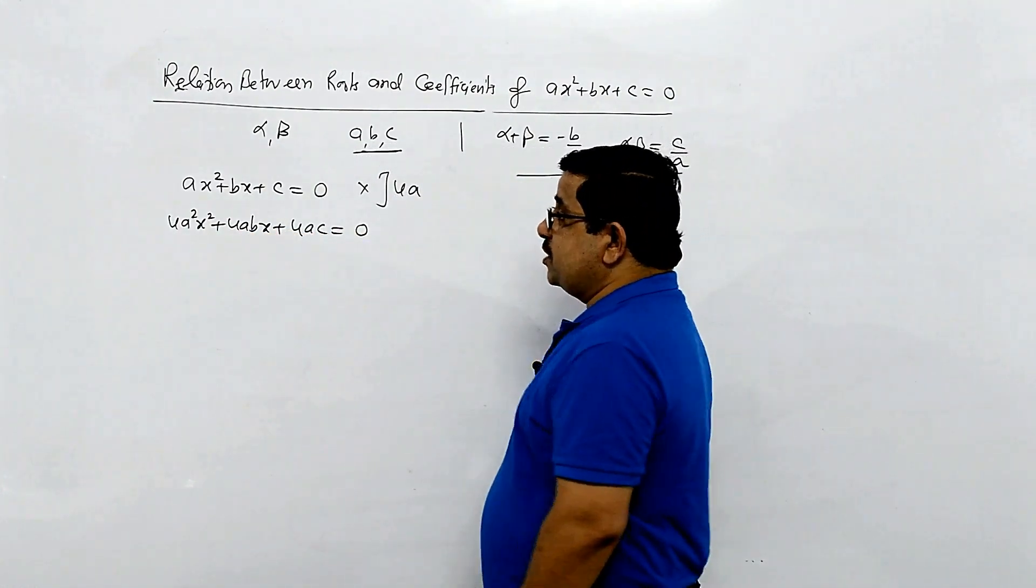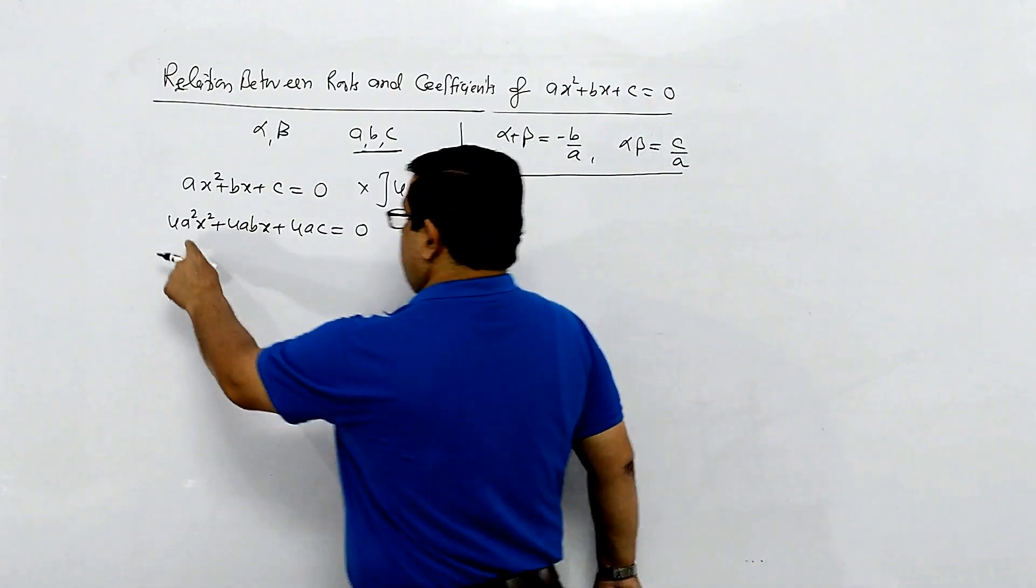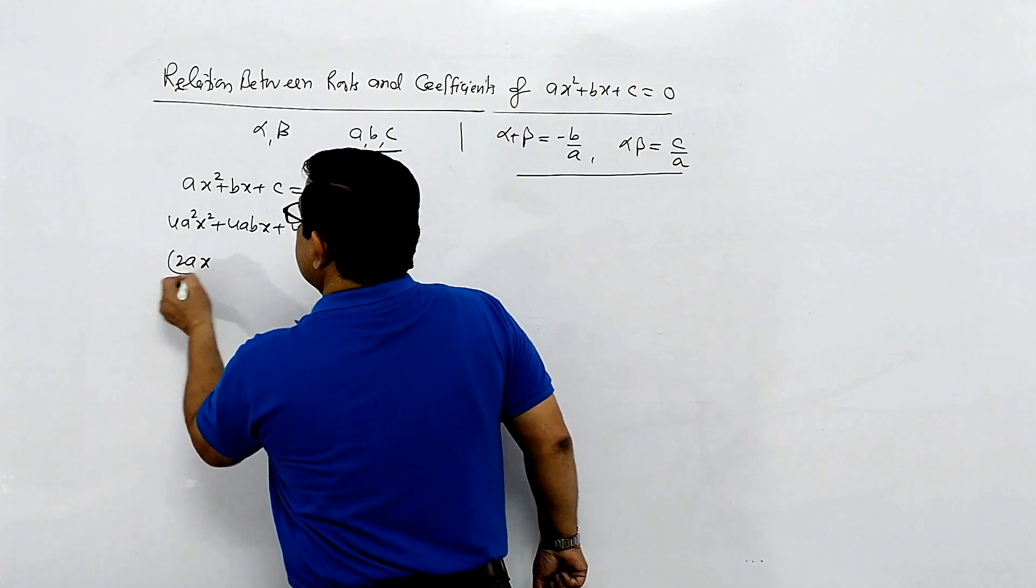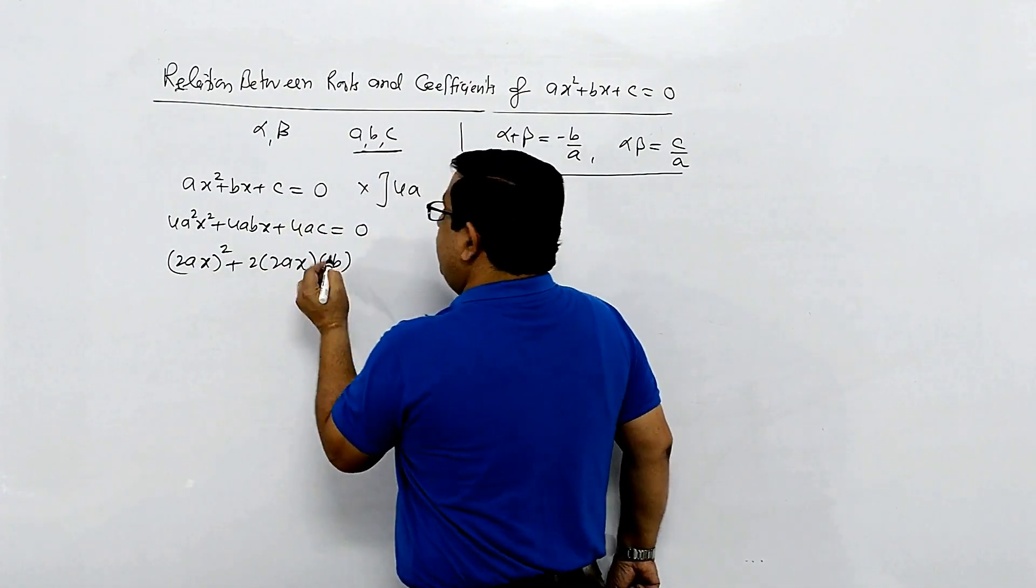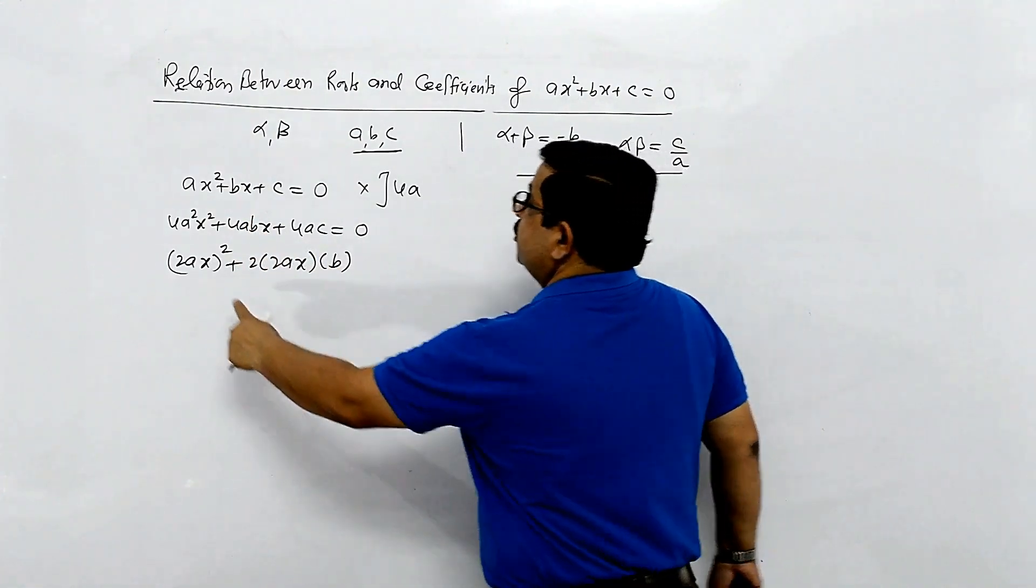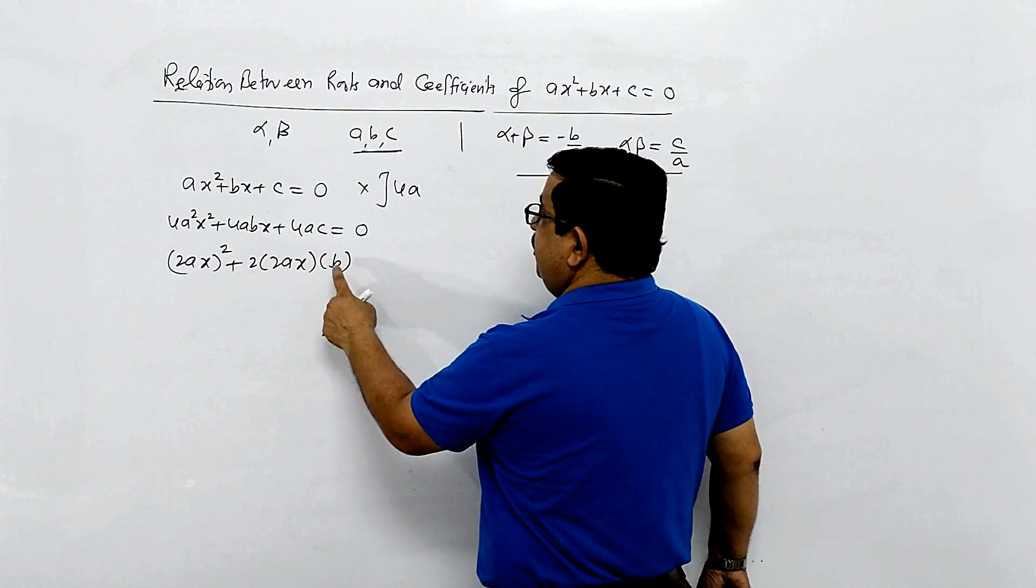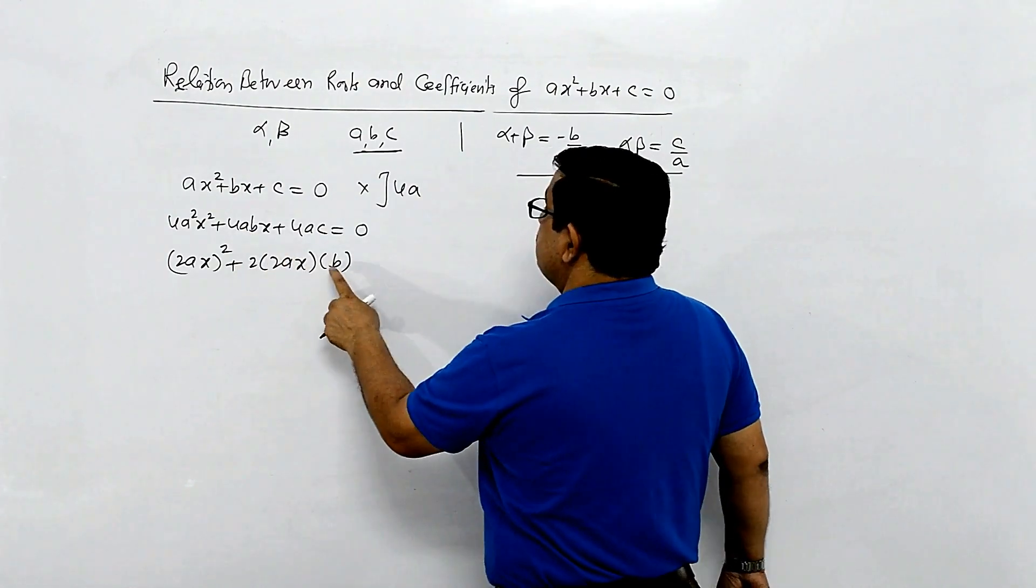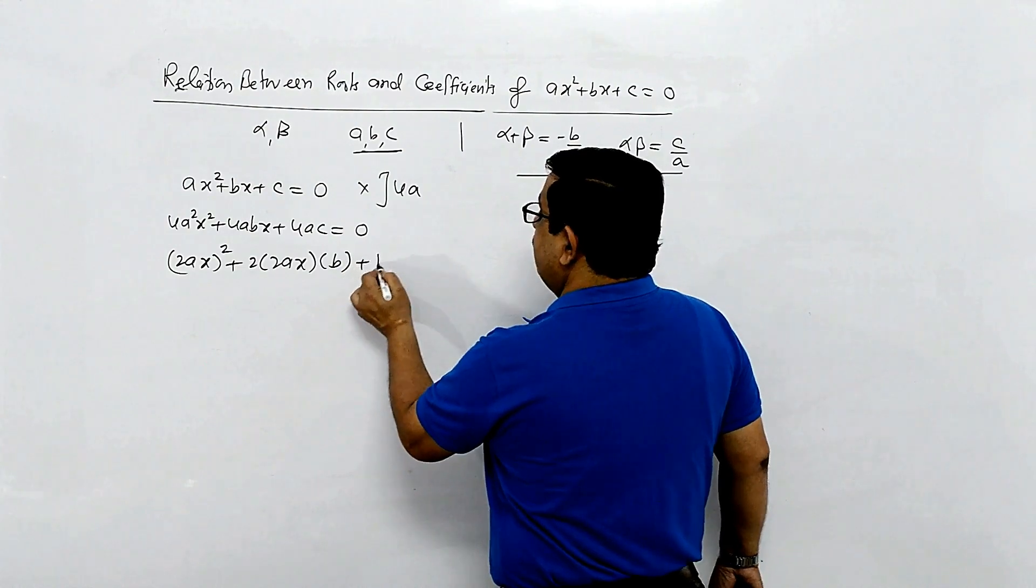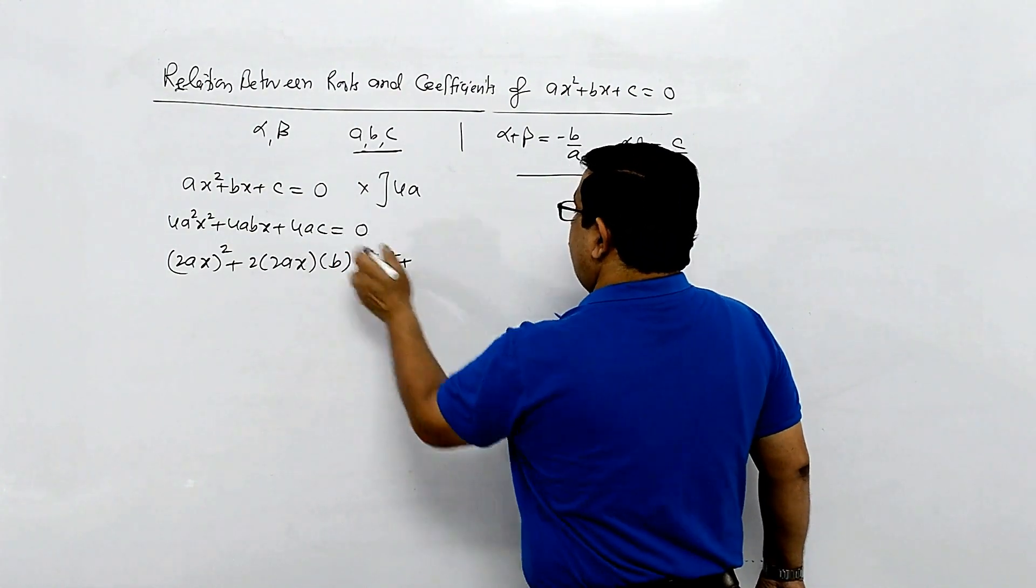This can be written as a perfect square. We have 2a square x square, 2 times 2ax into b. And this should be 2a square x square.